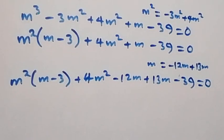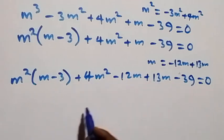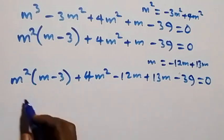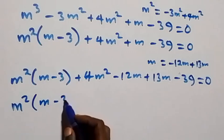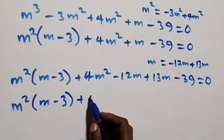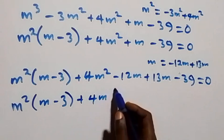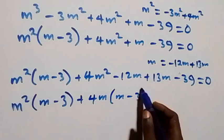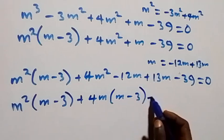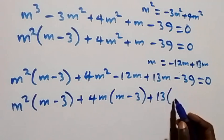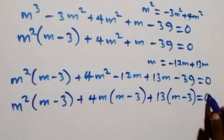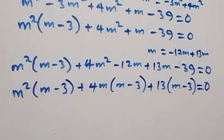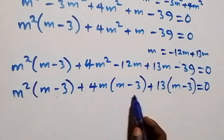Grouping together and factoring what is common, we have m squared into bracket m minus 3, plus 4m common leaving m minus 3, plus 13 common also leaving m minus 3, close bracket equals zero.